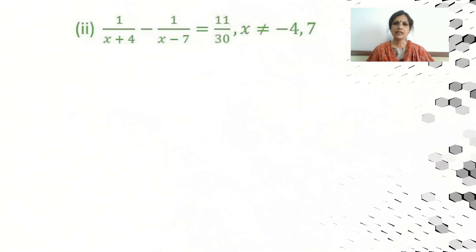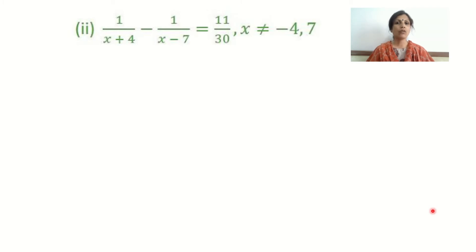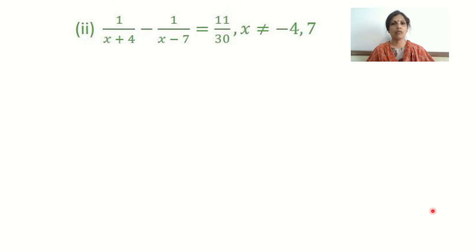The second sum from question number 3 is: 1 upon x plus 4, minus 1 upon x minus 7, equals 11 upon 30. Here x is not equal to minus 4 and 7, because if x equals minus 4 or x equals 7, the denominator becomes 0, making the terms undefined. Looking at the equation, we cannot immediately tell whether it is quadratic or linear, so we will cross multiply to find out.